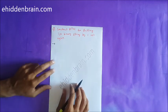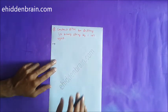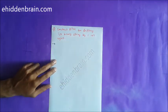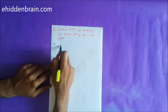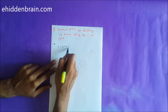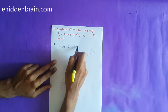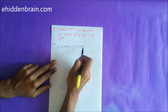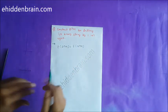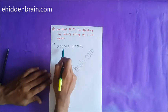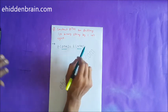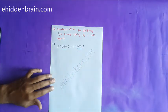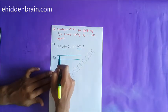First of all, I will let you know that there is no big difference between a deterministic Turing machine and a non-deterministic Turing machine, because the expressive power of a deterministic Turing machine equals the expressive power of a non-deterministic Turing machine. This means the number of languages accepted by both are the same.